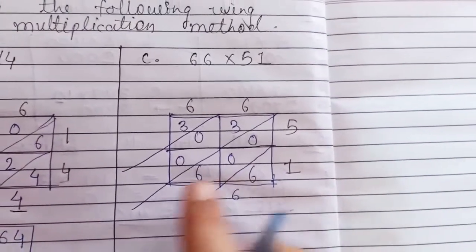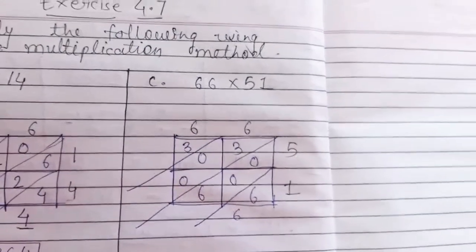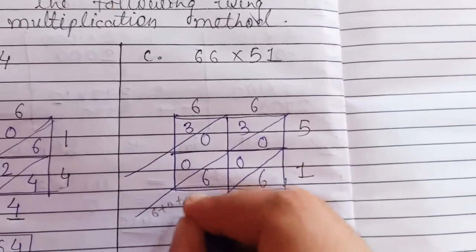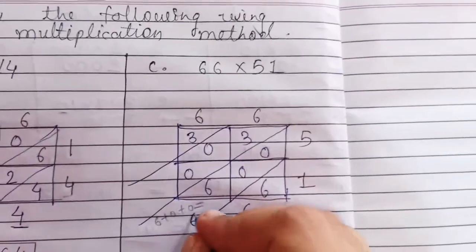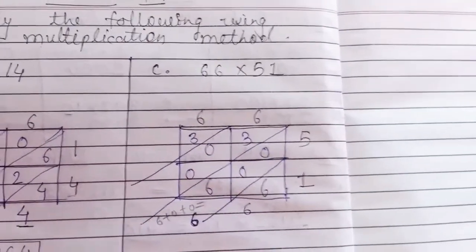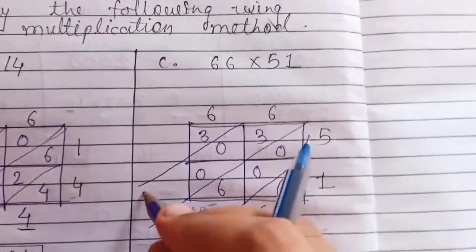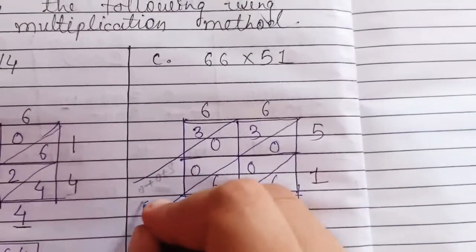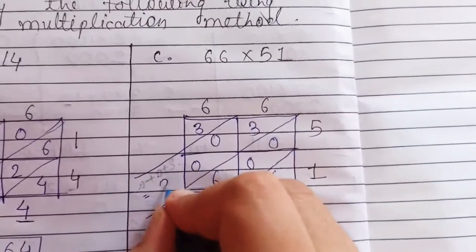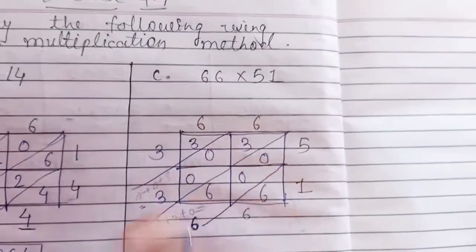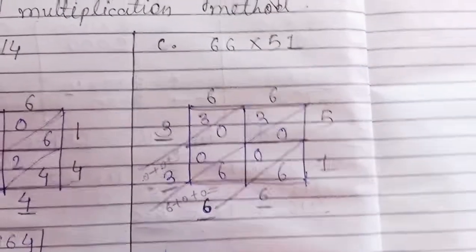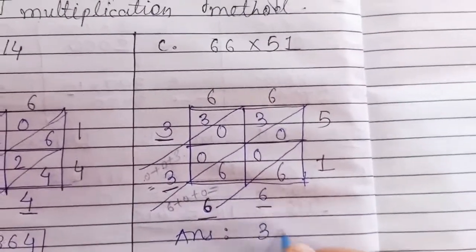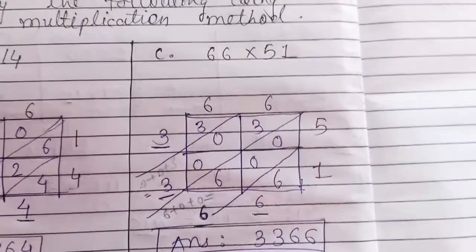Start the addition. There is only one 6 here. Then 6 plus 0 plus 0 is 6. Again 6 plus 0 is 6. Then 0 plus 0 plus 3 is 3. And here only 3. So underlining: 3, 3, 6, 6. Your answer is 3,366. This is your answer.